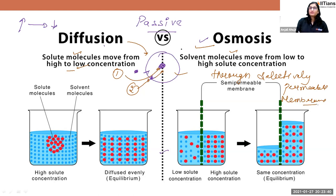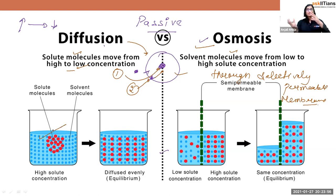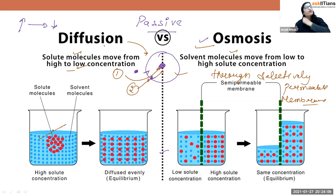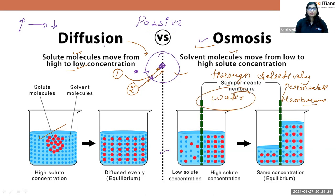A solution is made up of two things: solute and solvent. Solvent is usually water — the universal solvent. In diffusion, solute molecules move from high to low concentration. In osmosis, solvent (water) molecules move from high to low concentration through a selectively permeable membrane. For exam examples: osmosis — water molecule; diffusion — CO₂ and oxygen.